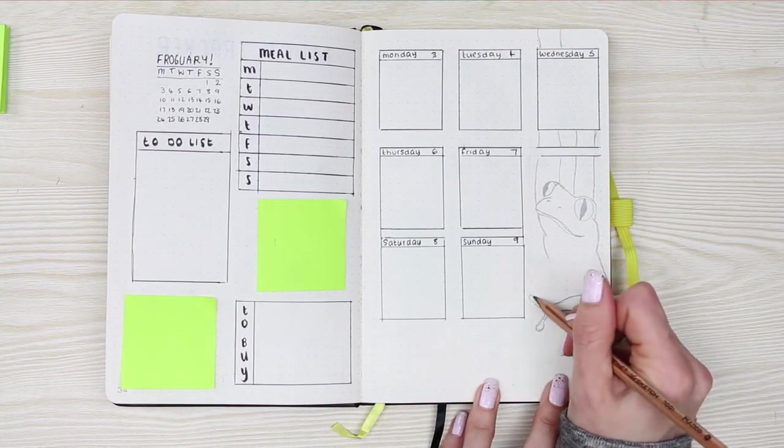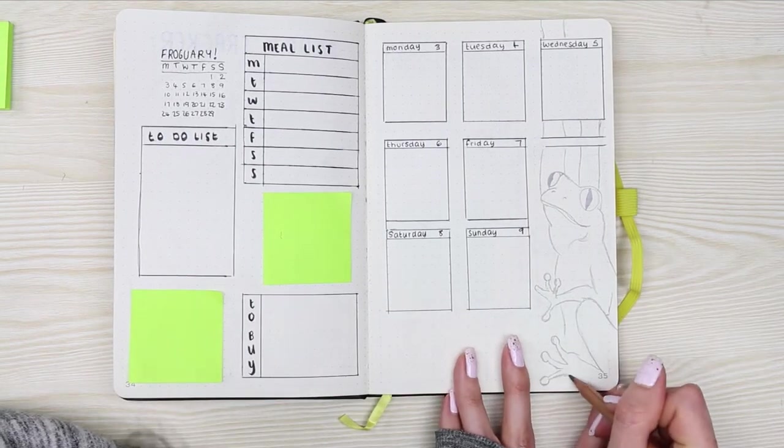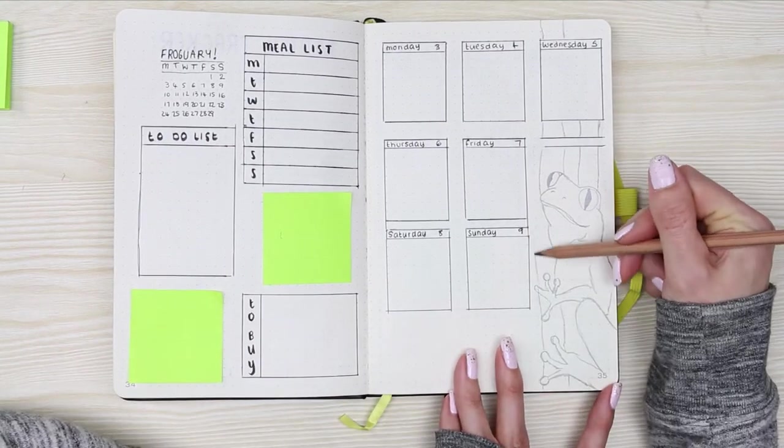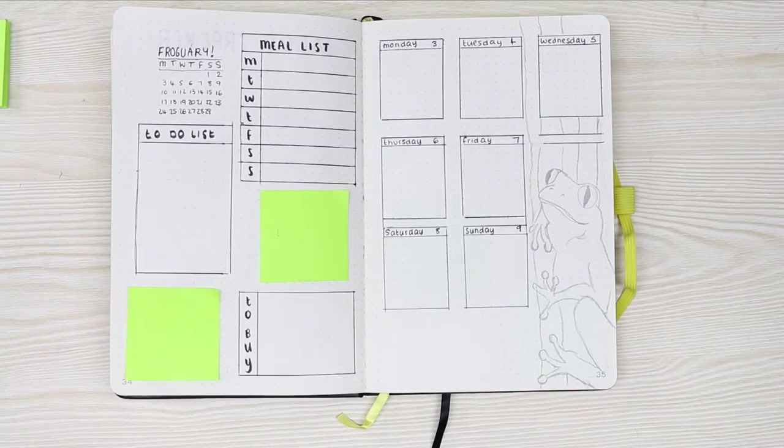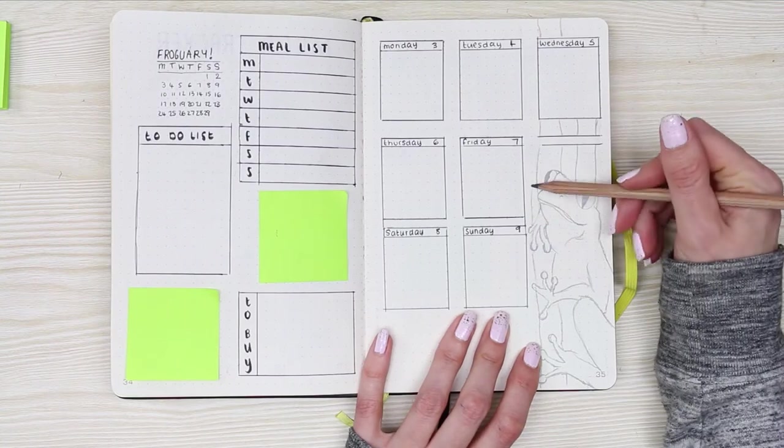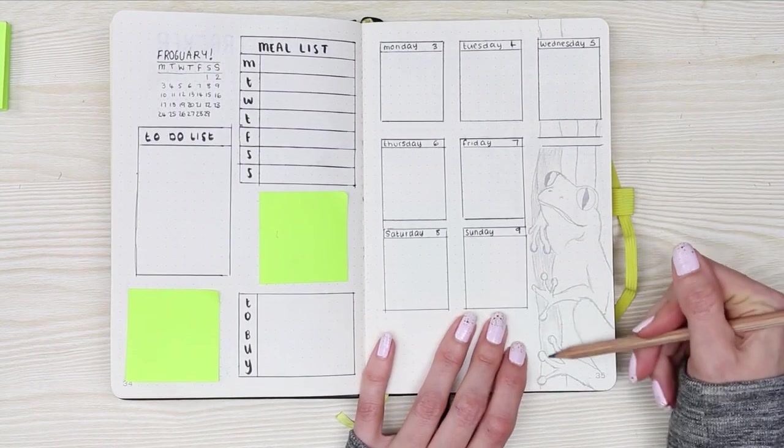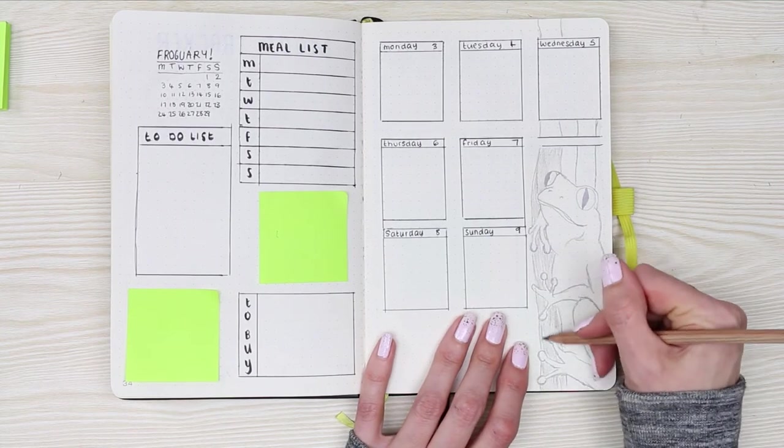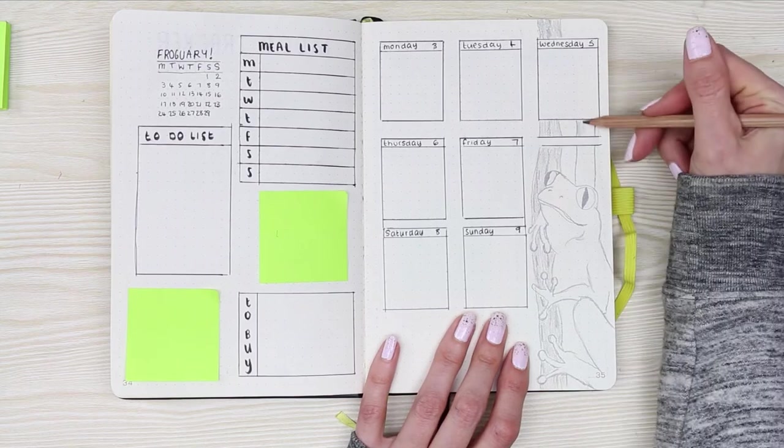I'm sure lots of people are drawing frogs for February in their bullet journals as it is a leap year. So if you've drawn frogs in your bullet journal, then I would love to see it. Make sure you send me a picture. You can send it to me through Instagram, which I'll have my handle linked down below.